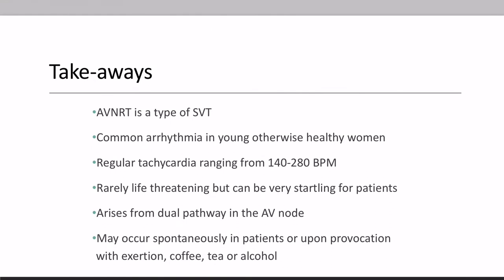Some takeaways: AVNRT is a type of supraventricular tachycardia and is very common in young and otherwise healthy women. The regular tachycardia will range from 140 to 280 beats per minute. It is very rarely life-threatening, but it can be very startling — people feel like their heart is beating out of their chest and will feel flutters. This arises from the dual alpha and beta pathways in the AV node. In the history, it may occur spontaneously or upon provocation with exertion, or drinking tea, coffee, or alcohol.